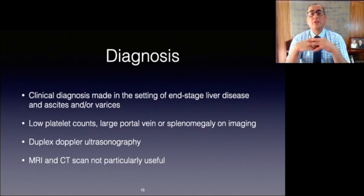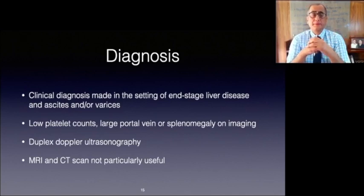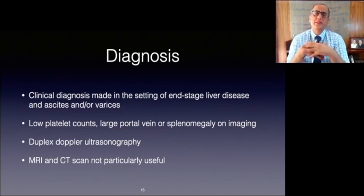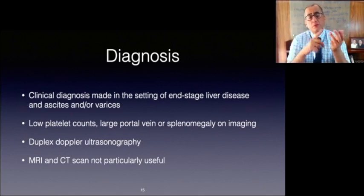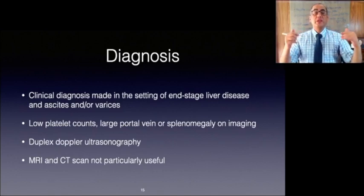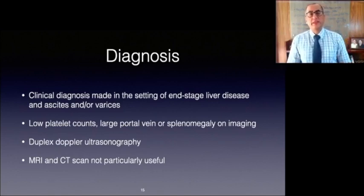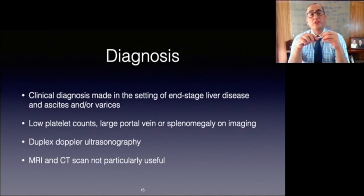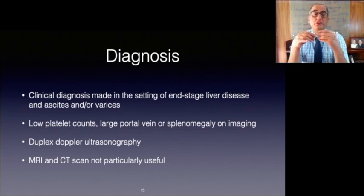MRI and CT are not particularly useful in making a diagnosis but are capable of providing some of the same information. Portal pressure measurement is not generally indicated; it is most often performed in settings of therapeutic or hemodynamic research studies. Clinically, it is used to assess the efficacy of pharmacological agents or shunting procedures. Most approaches to portal pressure measurement are relatively invasive, with the exception of newer endoscopic techniques. The most commonly used and preferred method is indirectly calculating pressure after occlusion of the hepatic vein — the wedged hepatic pressure — an invasive procedure typically performed by interventional radiologists.